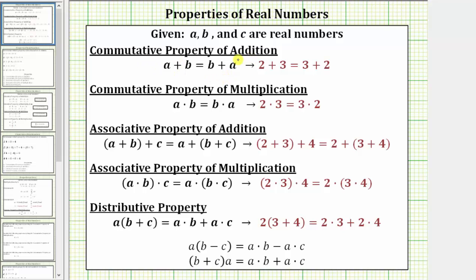Next, we have the associative property of addition, which is given as the quantity a plus b plus c equals a plus the quantity b plus c. When we change the grouping symbols or parentheses within a sum, we are using the associative property of addition.